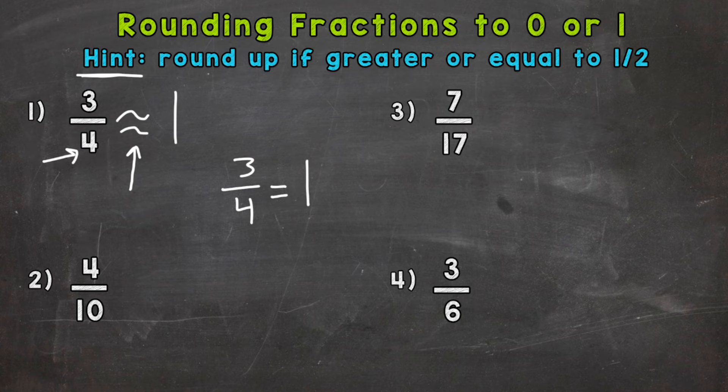So let's go to number 2. We have 4 tenths. So we need to think, is that greater than a half, equal to a half, or less than a half? Well, we know half of 10 would be 5 tenths. So we have 4 tenths, so that's less than half. So we would round to 0. 4 tenths is closer to 0 than it is to 1 whole.